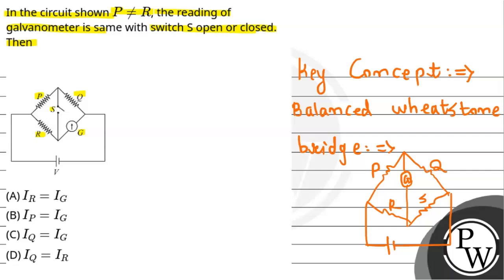According to the balanced Wheatstone bridge condition, if the ratio P/Q equals R/S, then the bridge is balanced.